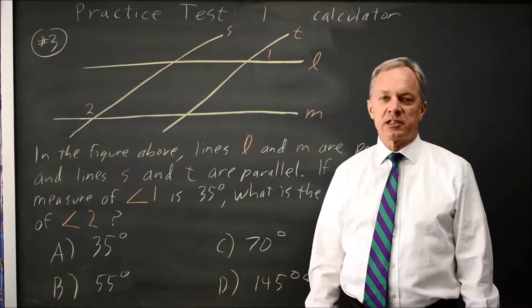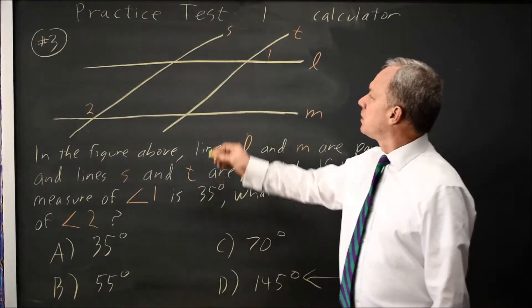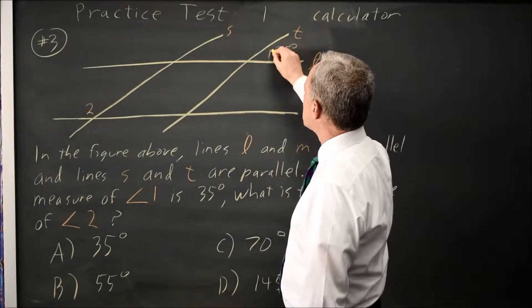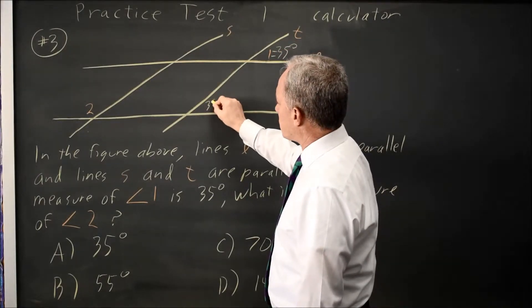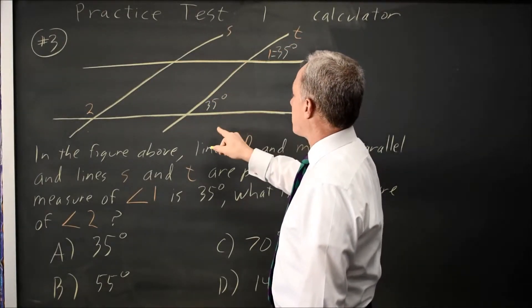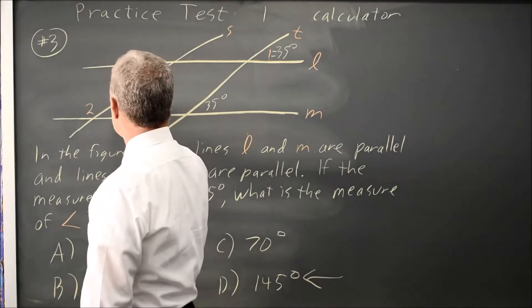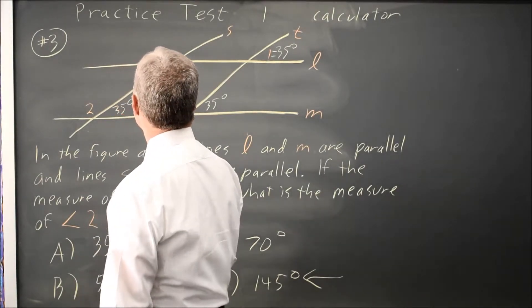Alternatively, if you actually want to use math, angle 1 is 35 degrees. So this is also 35 degrees because lines L and M are parallel. This is 35 degrees because lines S and T are parallel.